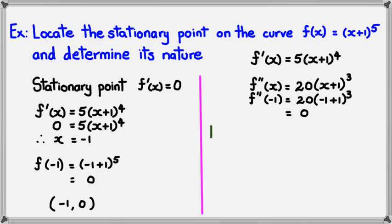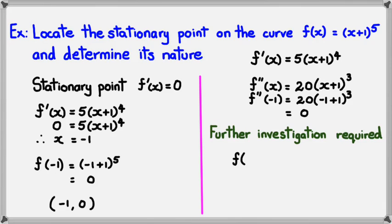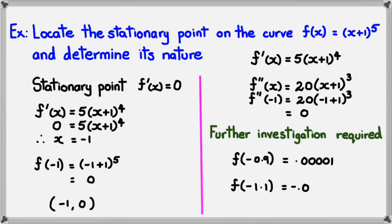The best way to do it is to look at f(−0.9). When I substitute it, I find that it's approximately 0.00001. And I'm going to find f(−1.1), and that is equal to −0.00001.